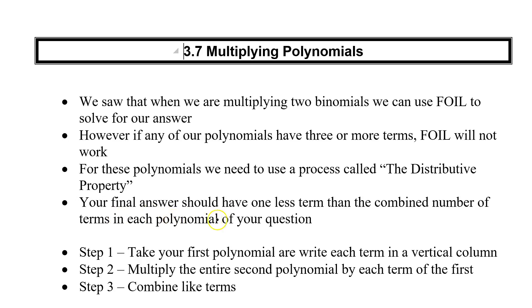Your final answer should have one less term than the combined number of terms in each polynomial of your question. So if I've got a trinomial times a trinomial, that would be 1, 2, 3, 4, 5, 6 terms. So my answer should have one less, so it should end up being a five-term polynomial. Just a little check for you here.